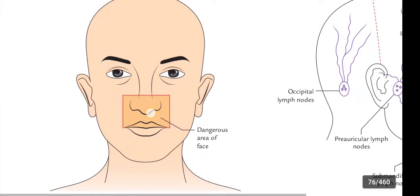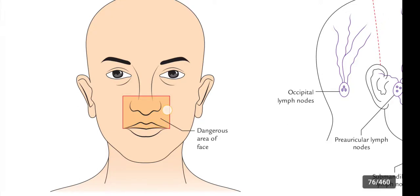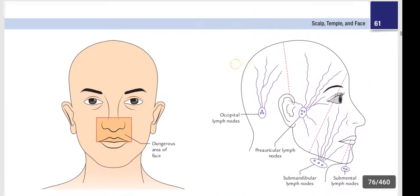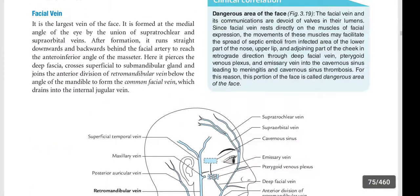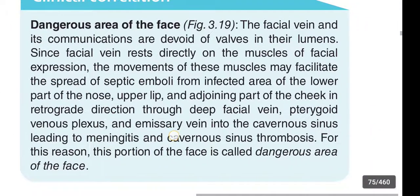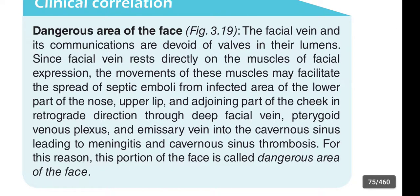Looking at the figure: the lower part of the nose, the upper lip, and somewhat the cheeks — this area is called the dangerous area of the face, because infections may reach the cavernous sinus through this area via the deep facial vein, pterygoid venous plexuses, and emissary veins, leading to meningitis as well as cavernous sinus thrombosis. If you like this video, like, share, and subscribe. Thank you.